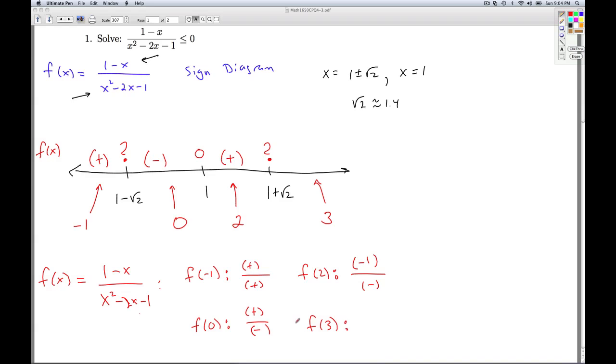And finally, I substitute x equals 3 in. In the numerator, I get 1 minus 3, which is a negative. In the denominator, I get 3 squared, which is 9, minus 2 times 3, which is 6, minus 1. That gives me a positive, and so this is a negative again.